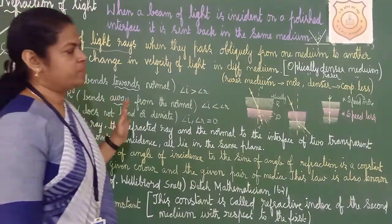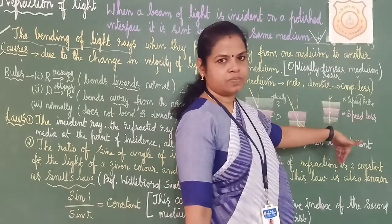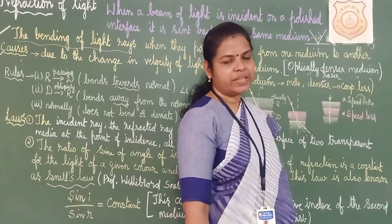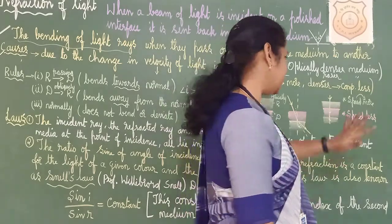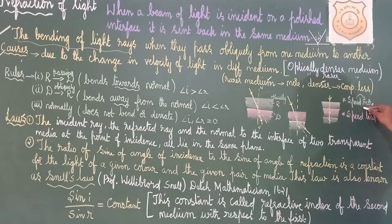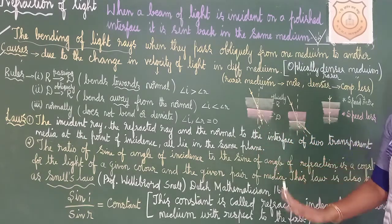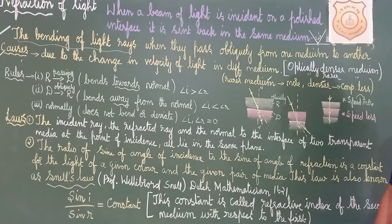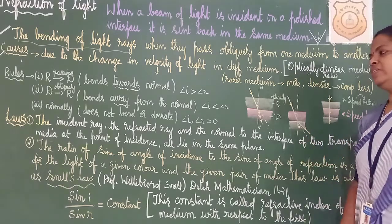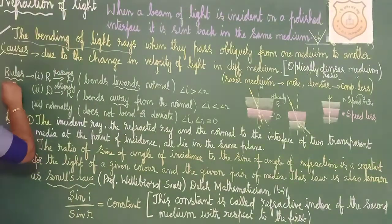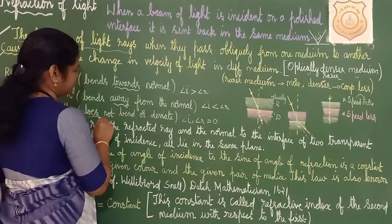The third rule: when light passes perpendicular — not obliquely, but straight — there will be no change. It comes straight through. So in rarer medium the speed of light is more, and in denser medium the speed of light is less, so it moves towards the normal. Don't write the home/school example — that is just to help you remember. The third rule: it does not bend.